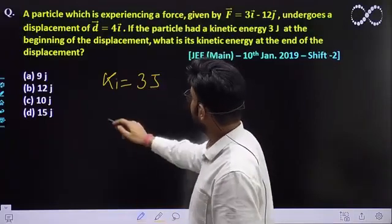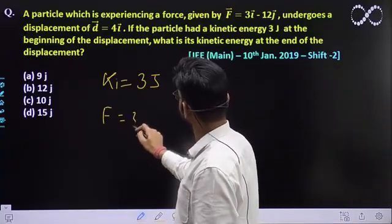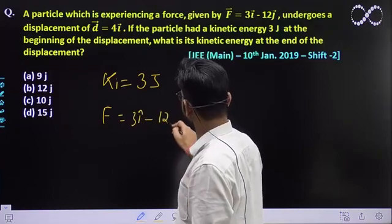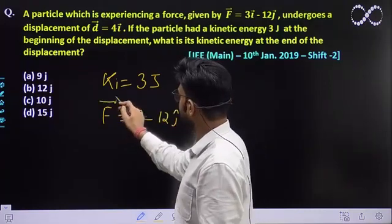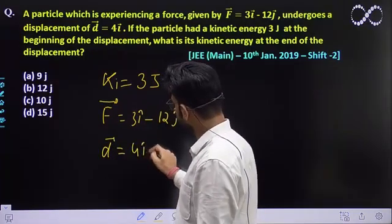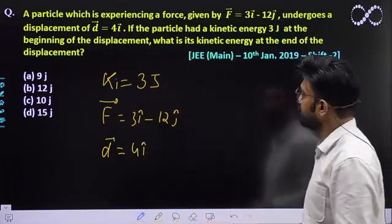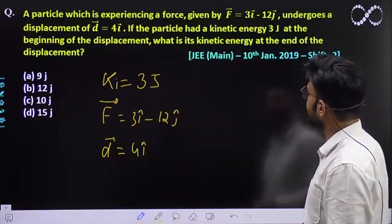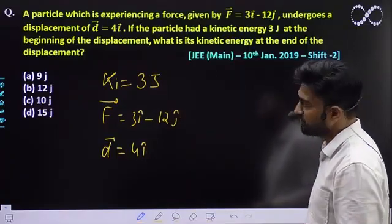Right now, the force is 3i cap minus 12j cap. This is the force which is acting and displacement is 4i cap. This is already given. Beginning of the displacement. What is its kinetic energy at the end of displacement?